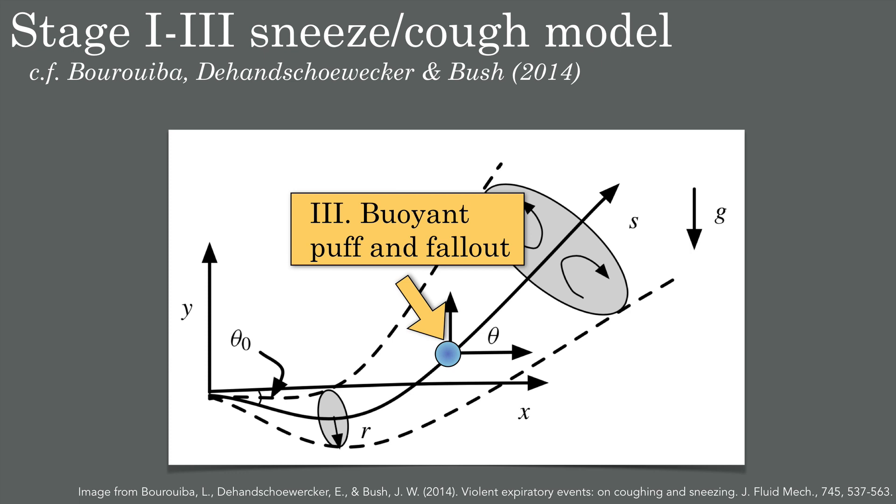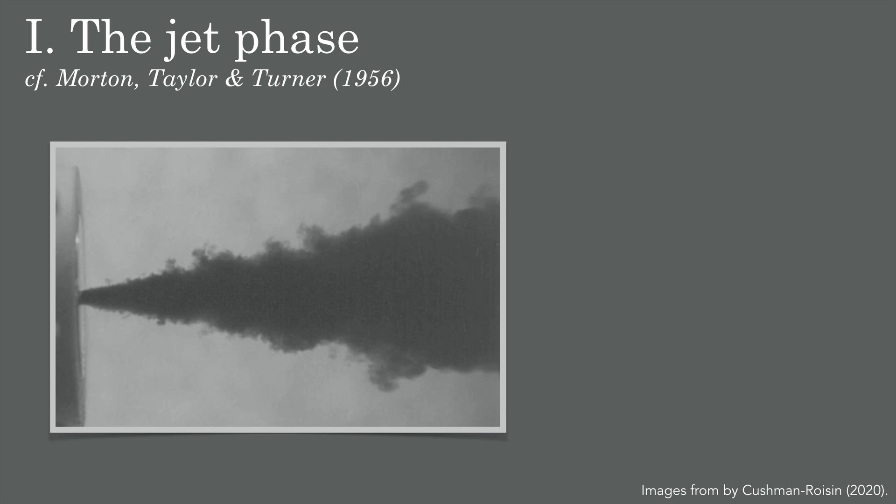The order of these three events may differ depending on the parameters of the system, and different definitions of fallout are possible. For example, you might define fallout to be the point where all droplets over a certain size have fallen out of the cloud. The first phase can be described by classic jet theory, which goes back to a paper by Morton, Taylor, and Turner in 1956.